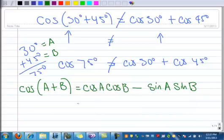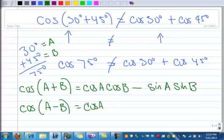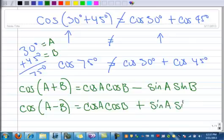And then likewise, in a similar fashion, let's do the cosine of A minus B. That's equal to the cosine of the first angle times the cosine of the second angle, plus the sine of the first angle times the sine of the second angle.